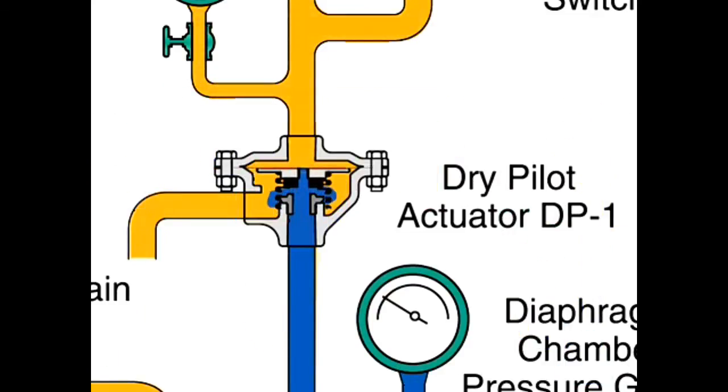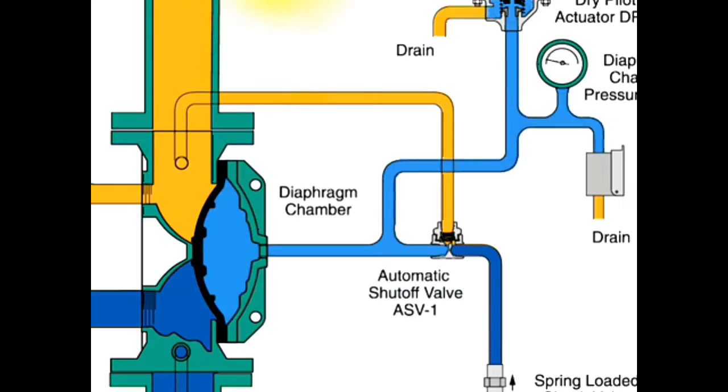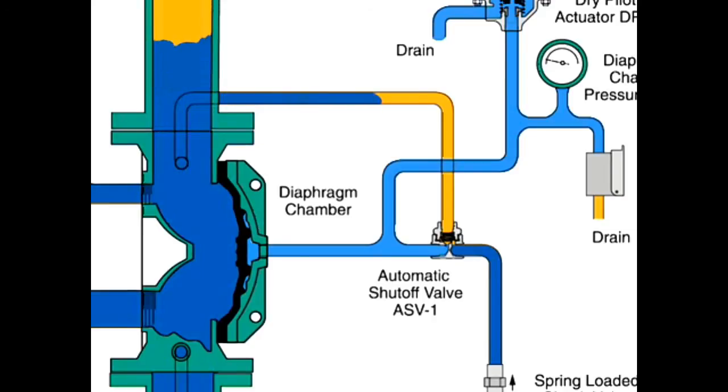When a fire sets off a dry pilot sprinkler, air pressure is released from the pneumatic pressure pilot line. In turn, the dry pilot actuator opens and releases water from the diaphragm chamber faster than it can be replenished through the one-eighths inch restriction in the automatic shutoff valve. The rapid pressure drop in the diaphragm chamber allows the diaphragm to open.